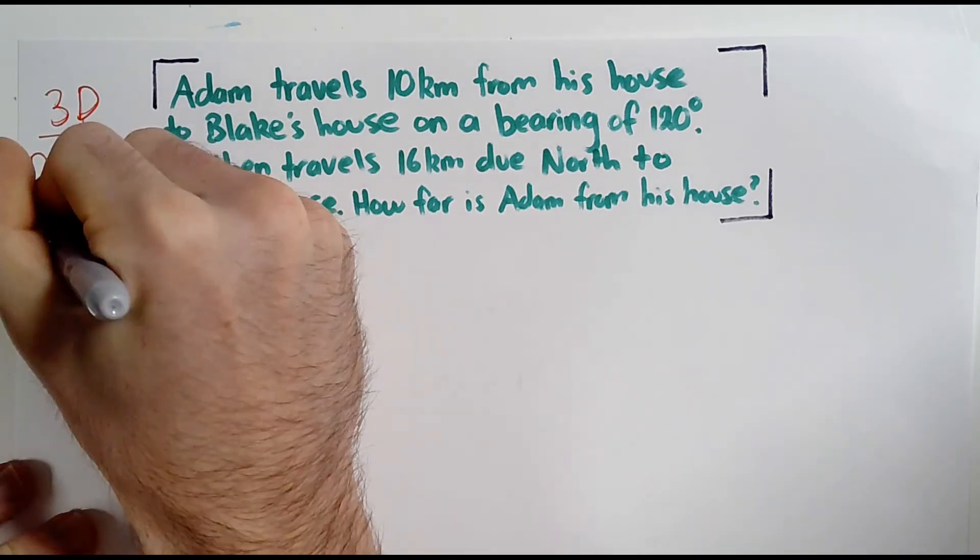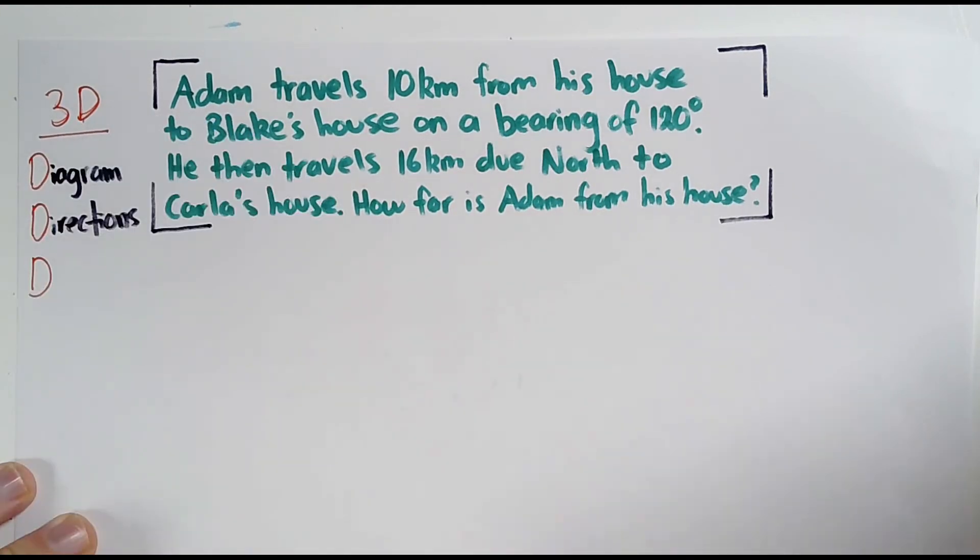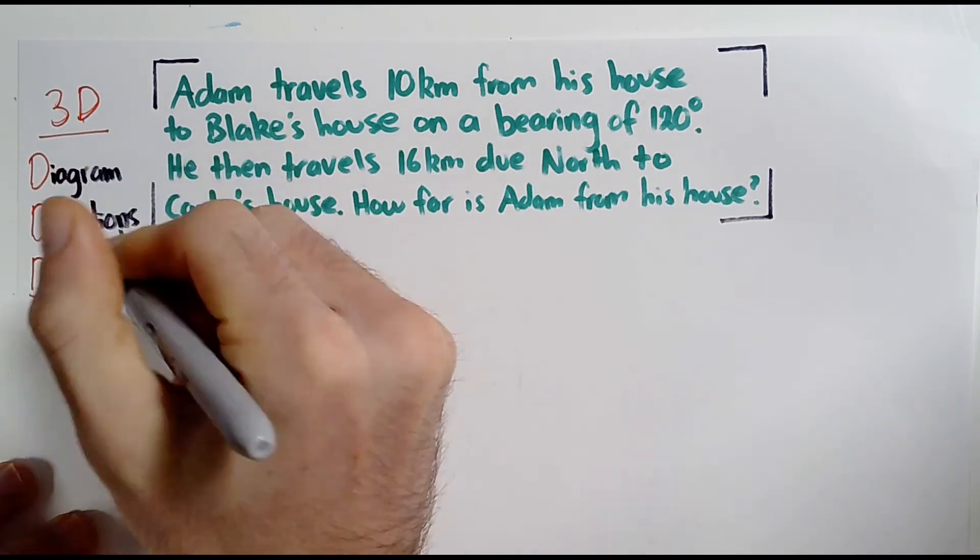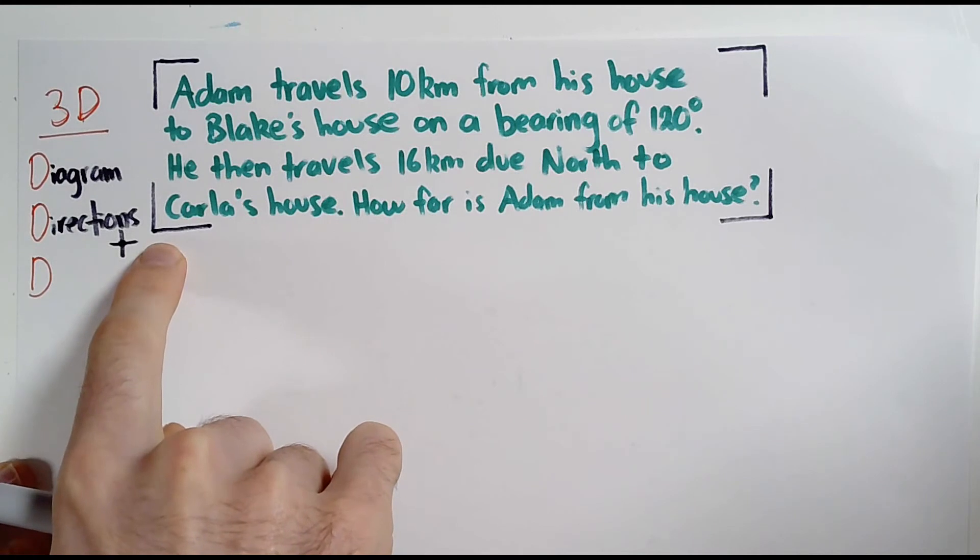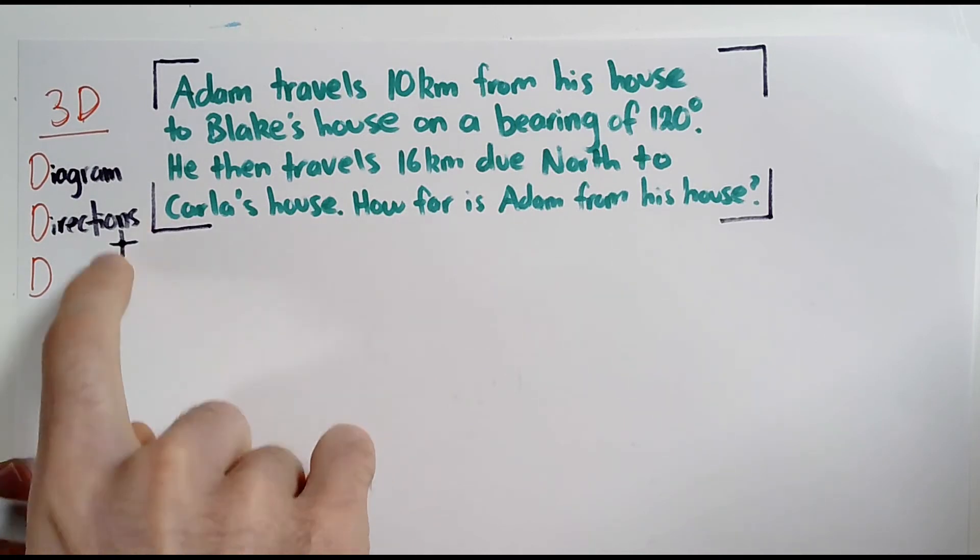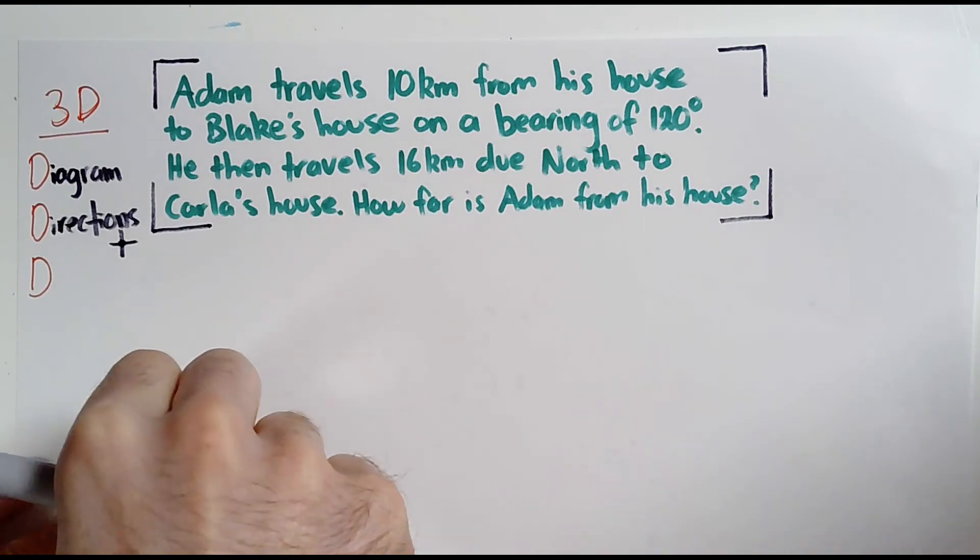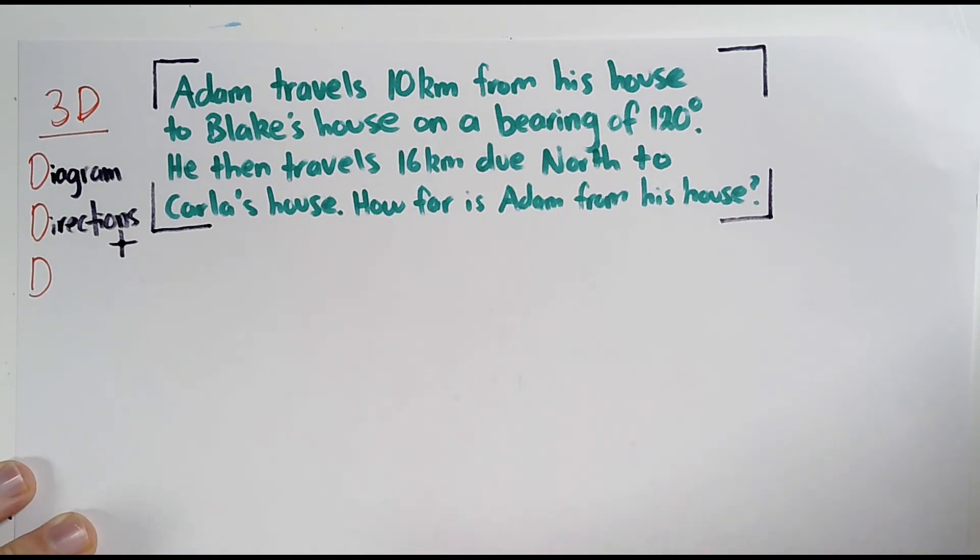The second D is directions or direction lines, and what we mean by that, it's just a way of making it fit with the 3Ds here, but it's the north-south-east-west lines. So at every point that you draw on the diagram, making sure you then draw a vertical line through it and a horizontal line through the point to represent north-south and east-west directions. You do that at every single point that is on your diagram. That's going to make it easier for you to fill in all of the relevant angles in the diagram and therefore will make it easier for you to solve the question.